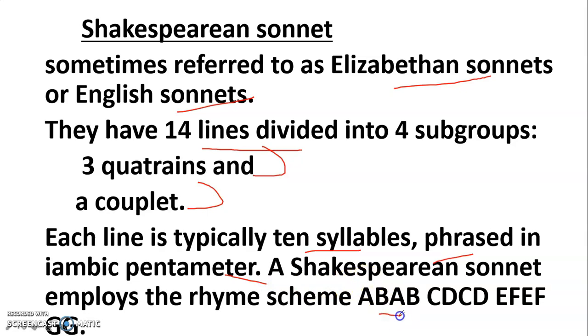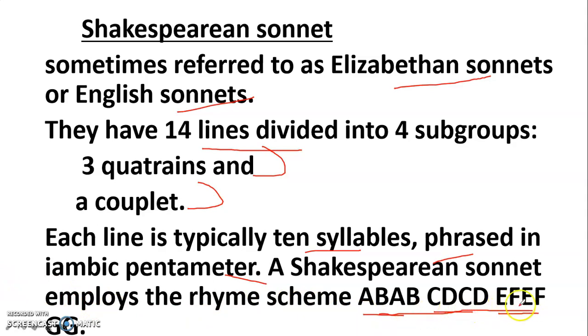The Shakespearean sonnet's rhyme scheme is ABAB CDCD EFEF for the three quatrains, and GG for the closing couplet.